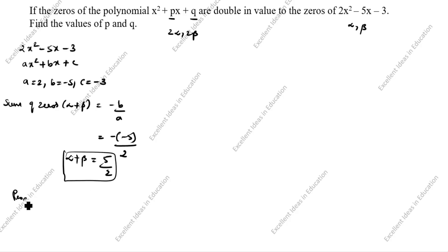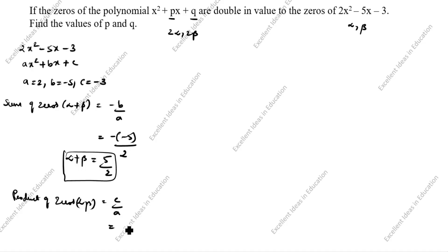Product of zeros: alpha beta is equal to c by a. c is minus 3, a is 2. So alpha beta is equal to minus 3 by 2.